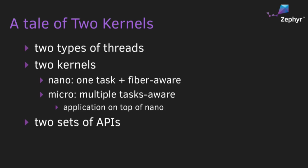I'm going to talk about the unified kernel for Zephyr. The first question you might have is: why do we call it the unified kernel? As you could have seen in Anas's presentation, the Zephyr kernel actually consists of two kernels. We have two types of threads in Zephyr.